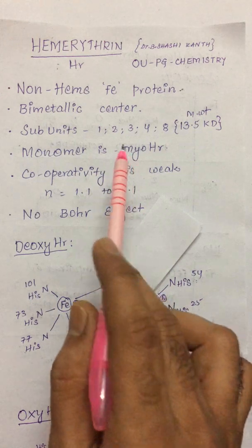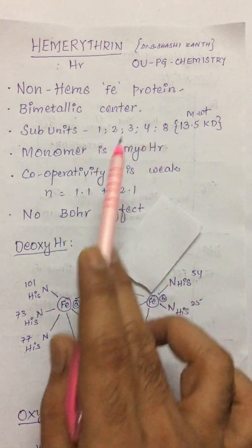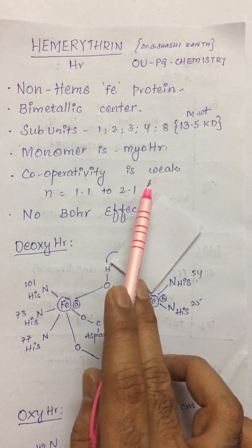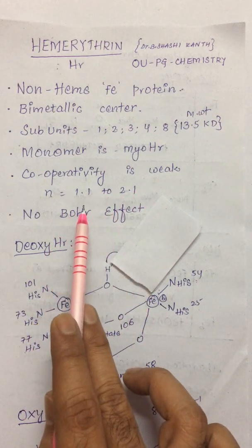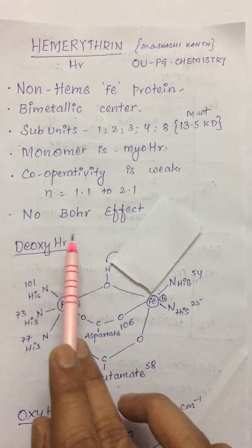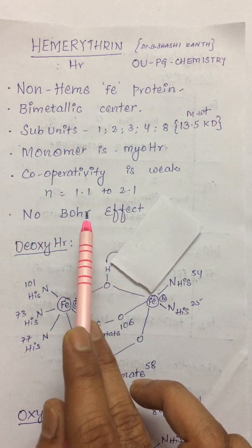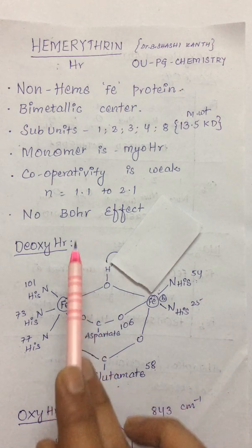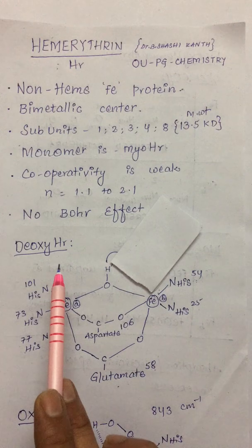Hemerythrin can be found in some marine invertebrates. Though the number of subunits can range from monomer to octamer, cooperativity is found to be pretty weak — the Hill's constant is around 1.1 to 2.1. Also, there is no Bohr effect, unlike what is seen in hemoglobin. There are two different variants of hemerythrin depending upon ligand binding.